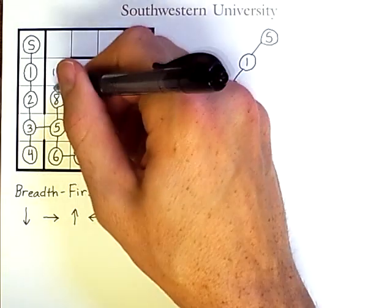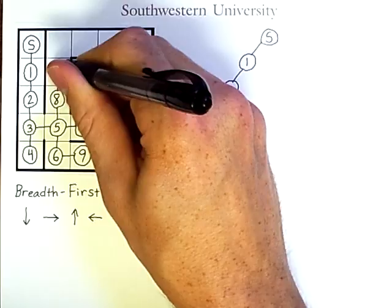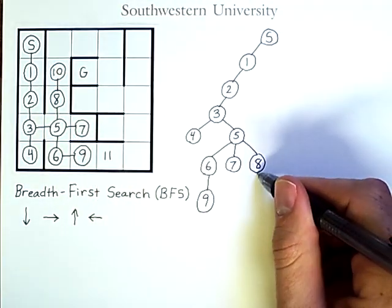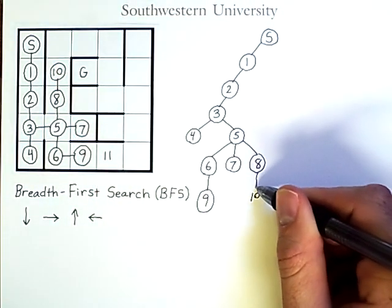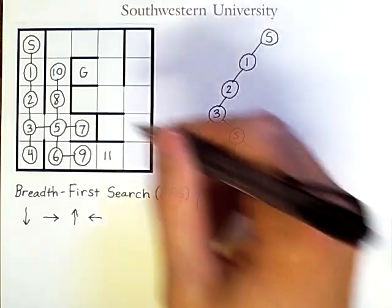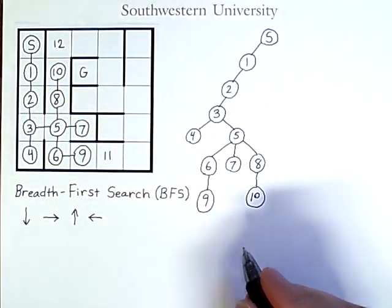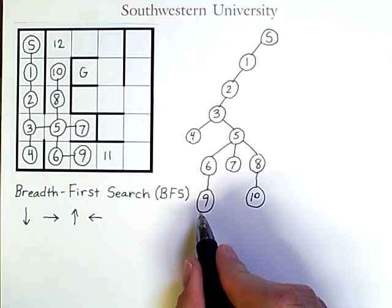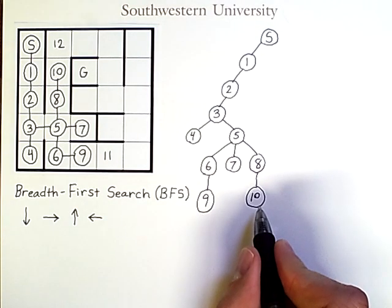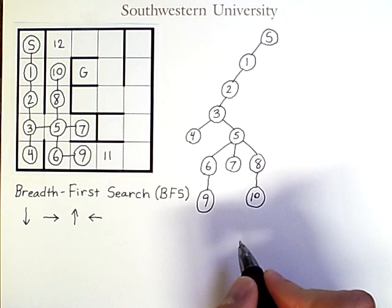From eight, I can get to ten, and ten has a successor, which will be the twelfth node I check. Once again, notice that I look at all nodes of a given depth before doing any nodes deeper down.